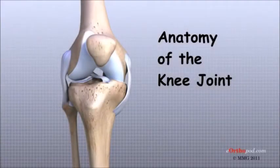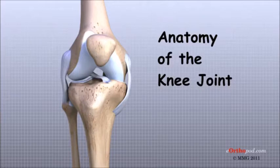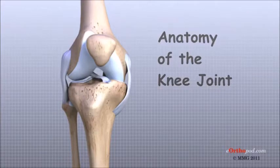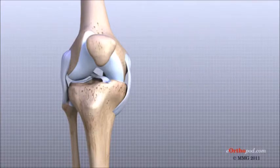A well-functioning knee joint is critical to mobility, including standing, walking and running. To better understand how knee problems occur, it is important to understand some of the anatomy of the knee joint and how the parts of the knee work together to maintain normal function.